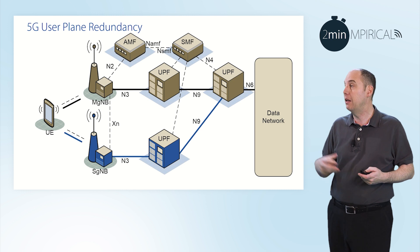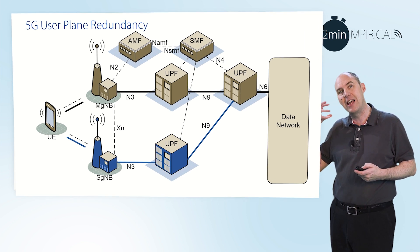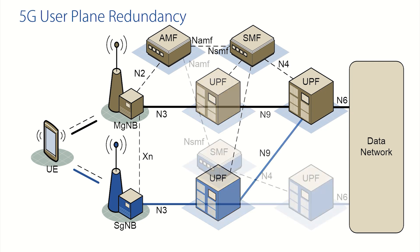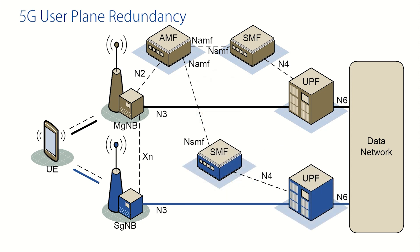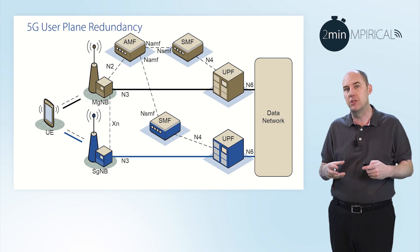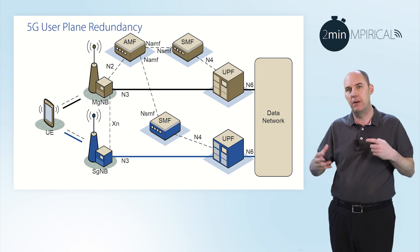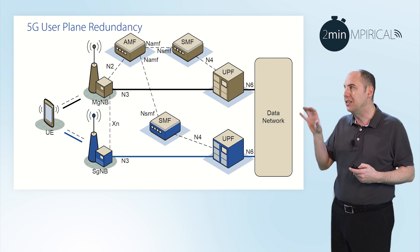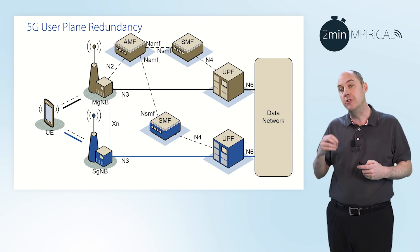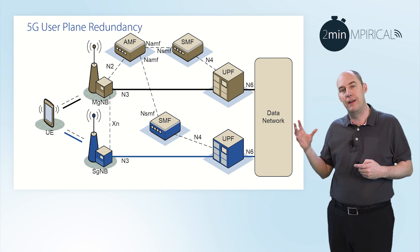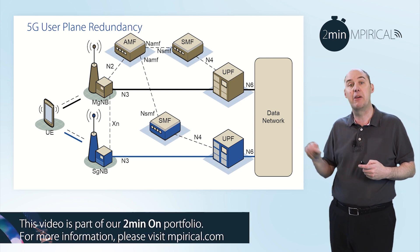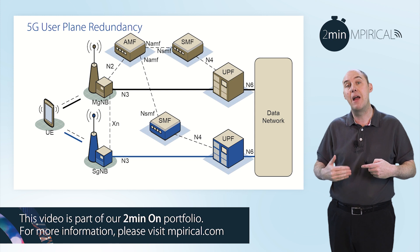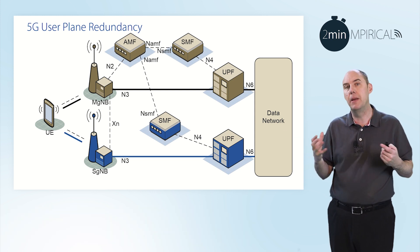You could then say the point of failure is now the anchor UPF at the N6 interface. And not surprisingly, we can go one stage further by having two anchor UPFs. There are many attributes associated with this — different connectivity, IP addressing, and various permutations — but it is an option. We now have very distinct user plane redundancy: through the master to one anchor, and through the secondary to a different anchor, both connecting to the data network. So as you can see, 5G has various levels of redundancy within the user plane that can be implemented.